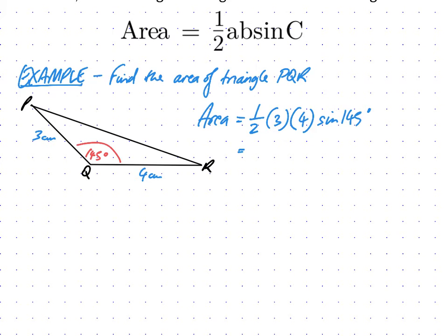So sine of 145 in the calculator. Sine 145 equals 0.575. It's ongoing, I leave that in the calculator, times that by 3, times that by 4, divide that answer by 2, you get 3.44.